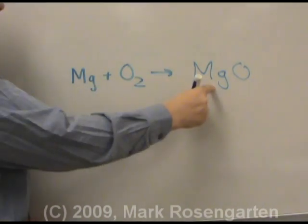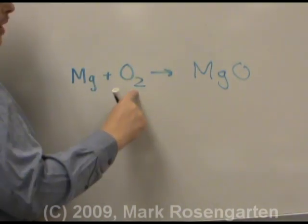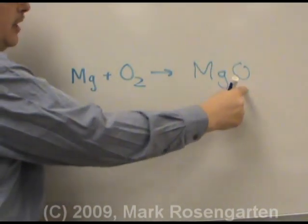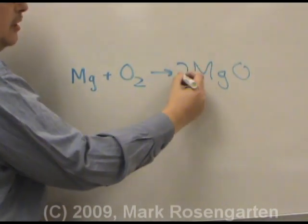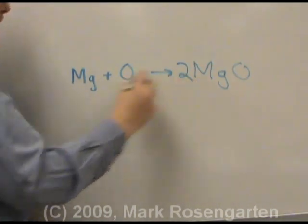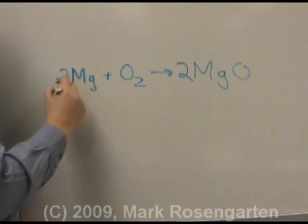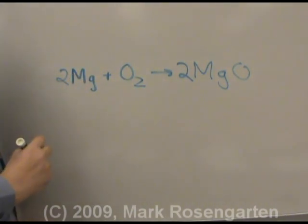Balancing the equation: one magnesium on the left, one magnesium on the right. Two oxygens on the left, one oxygen on the right. Placing a two in front balances both magnesiums and oxygens. This reaction is balanced.